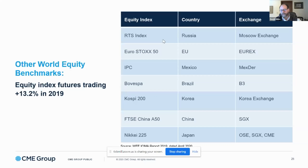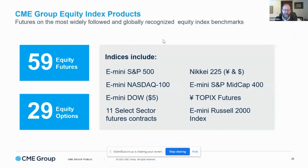Some indices, like the Nikkei 225 out of Japan, have futures contracts listed on multiple exchanges — in Osaka, in Singapore, and CME has two futures contracts based on the Nikkei 225: one in dollar terms and one in yen terms. This speaks to the global aspect and size of the listed derivative space. CME currently has 59 equity-based futures products, of which 29 also have options listed against them.